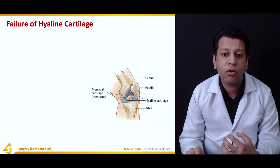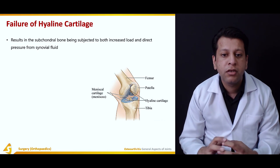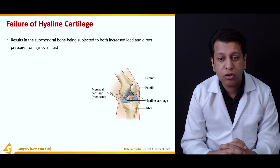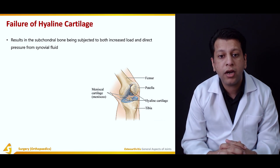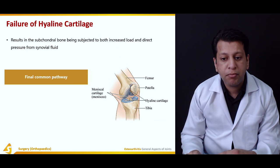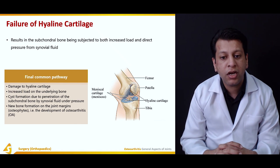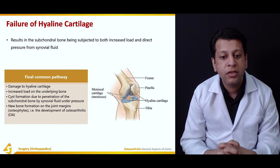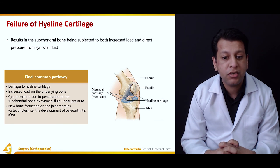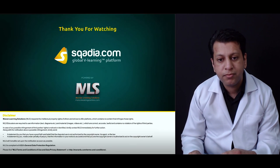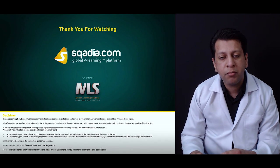Failure of the hyaline cartilage results in the subchondral bone being subjected to increased load and direct pressure from the synovial fluid. The final common pathway involves damage to the hyaline cartilage, increased load on the underlying bone, cyst formation due to penetration of the subchondral bone by synovial fluid under pressure, new bone formation on the joint margin forming osteophytes, and ultimately the development of osteoarthritis. Thank you very much, keep watching scadia.com.